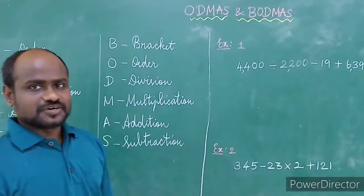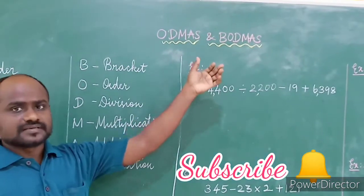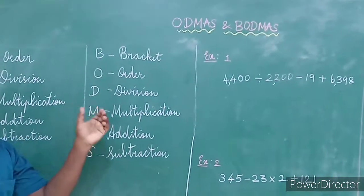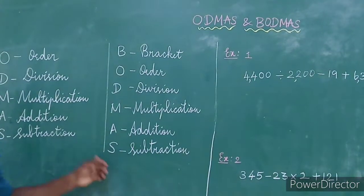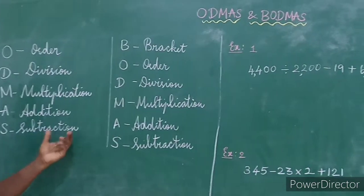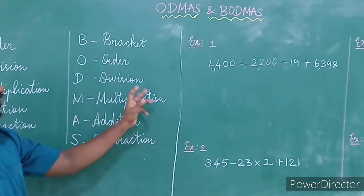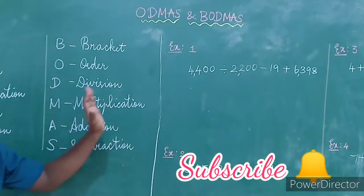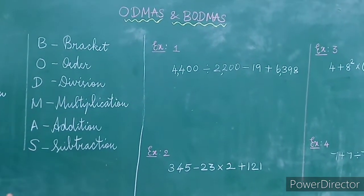Hi everyone, welcome back to our channel. This is again about BODMAS. In the previous video I explained what BODMAS is: Brackets, Order, Division, Multiplication, Addition, and Subtraction. This is the order in which operations must be done on a mathematical expression.